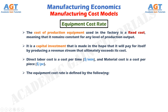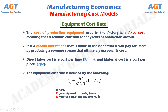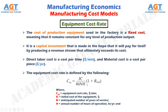The equipment cost rate is defined by the following: CEQ equals IC divided by (60 × N × H), multiplied by (1 plus ROH), where CEQ represents equipment cost rate expressed in dollars per minute, IC represents the initial cost of the equipment expressed in dollars, N represents the anticipated number of years of service, H represents the annual number of hours of operation expressed in hours per year, and ROH represents the applicable overhead rate for the equipment expressed as a percentage.